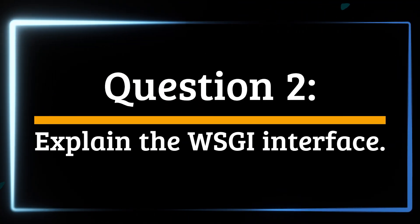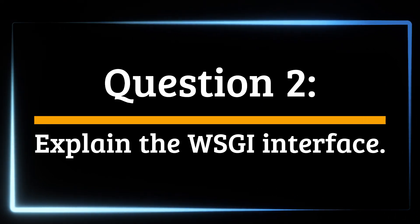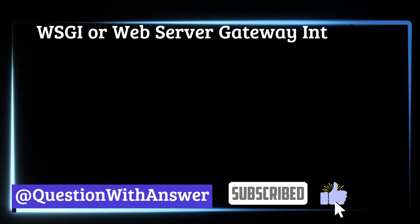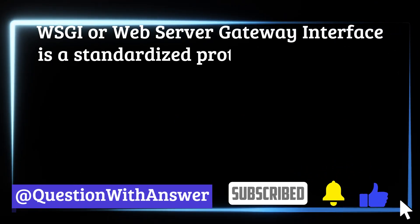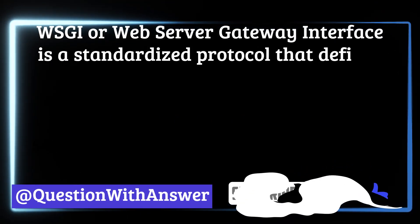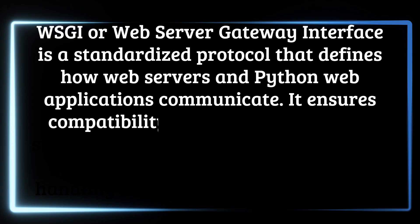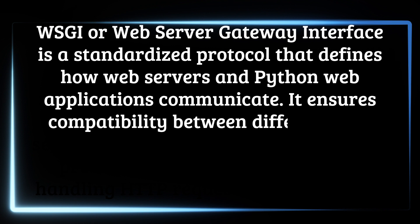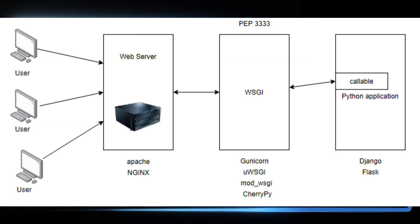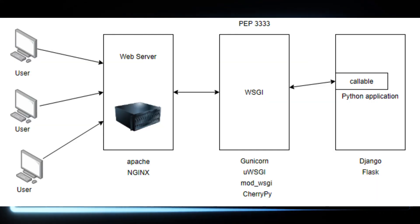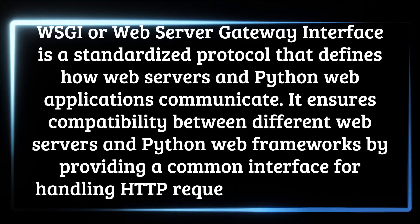Question 2: Explain the WSGI interface. WSGI, or Web Server Gateway Interface, is a standardized protocol that defines how web servers and Python web applications communicate. It ensures compatibility between different web servers and Python web frameworks by providing a common interface for handling HTTP requests and responses.